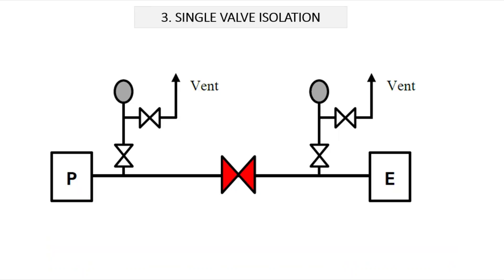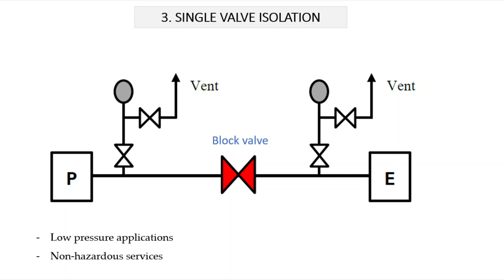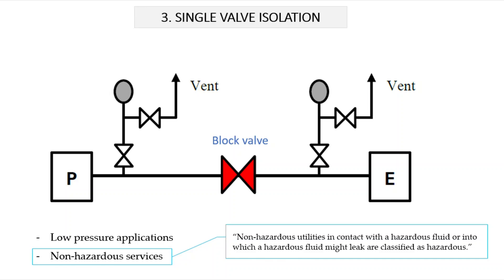The third and least secure type of isolation is single valve isolation, which does not have a bleed point. It can be achieved by simply closing a single block valve and is used for very low pressure applications and non-hazardous services. Classification of a line as hazardous or non-hazardous is very important, as in history some accidents happened where contamination of service lines with process fluid was overlooked, the line was mistakenly considered non-hazardous, and implementation of single valve isolation led to an accident.